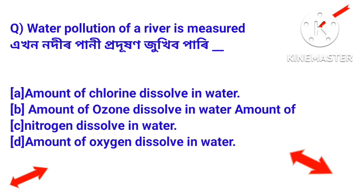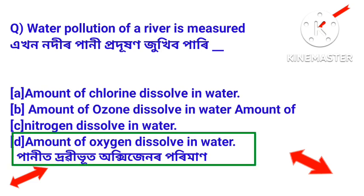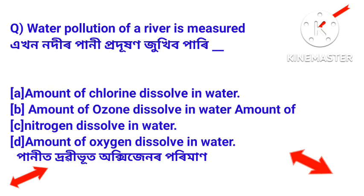Water pollution of a river is measured by the amount of oxygen dissolved in water. Echon nodir pani produhon jukhi ba pari — ancharva amount of oxygen dissolves in water, arthat pani drabibhuta oxygener puriman jukhi ba pari.